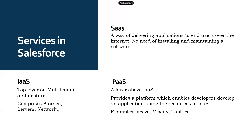The next layer would be PaaS — Platform as a Service — which basically means utilizing the infrastructure provided by a cloud service, they try to build a platform so that developers can use it to build an application for end clients. Examples would be Viva CRM, built specifically for the pharmaceutical industry, and Velocity is also a PaaS — as is Tableau or CPQ.